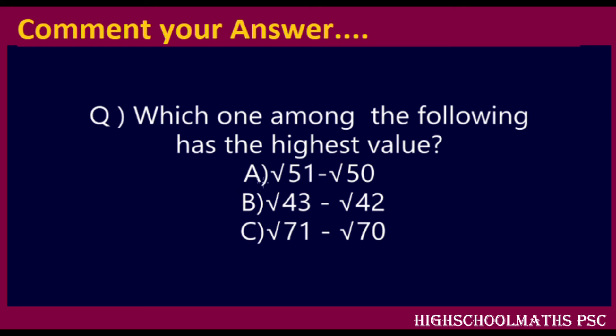Three options: Option A is √51 − √50, Option B is √43 − √42, Option C is √71 − √70. If you have any questions about this last question, you have to write and answer it. If you have any questions, comment and share this video with your friends. We will see you in the next video.